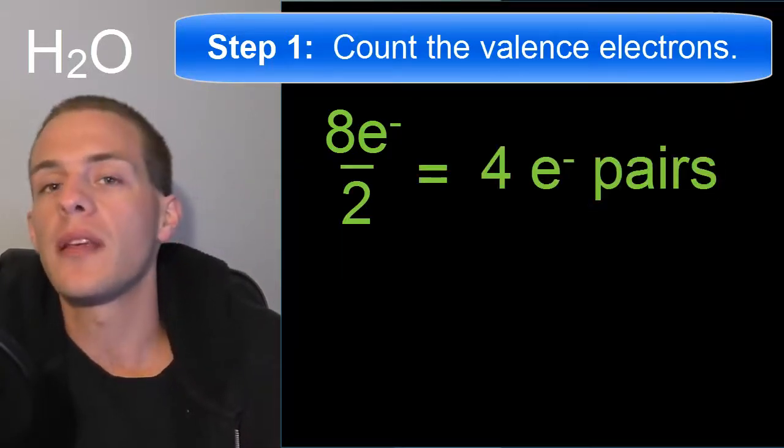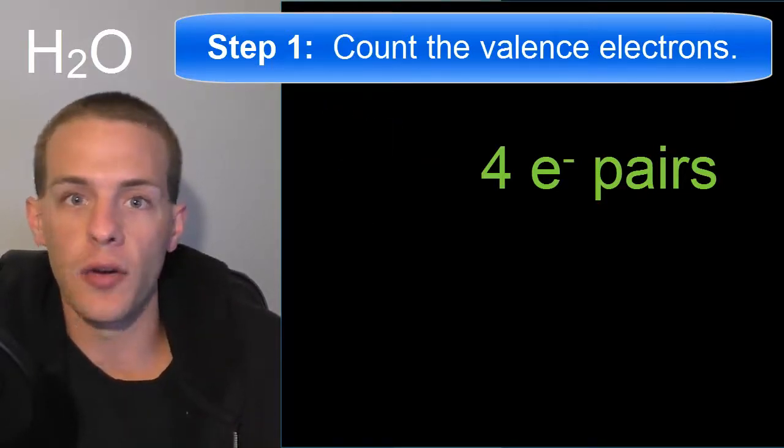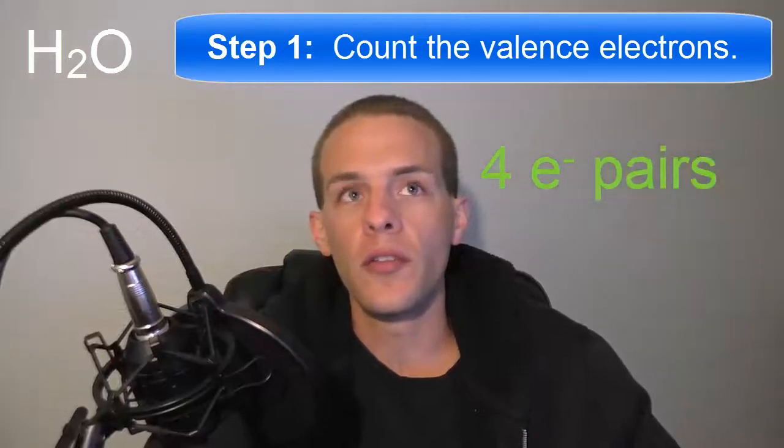Also, if you're dealing with a polyatomic ion — if you see a plus or minus sign — you're going to add or remove electrons to accommodate that charge. For instance, a charge of plus one means you remove one electron from the total; a charge of minus two means you add two electrons after summing up the valence electrons for all atoms. But in this case there's no charge, so we don't have to worry about that. We have eight valence electrons, which is four electron pairs.